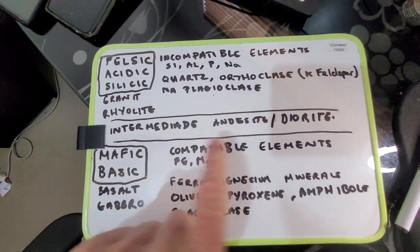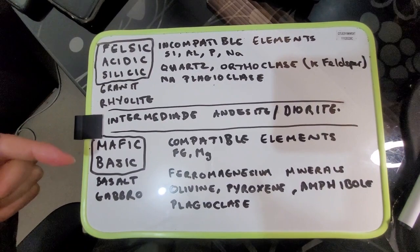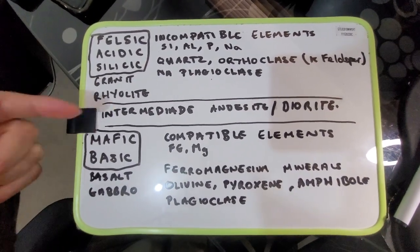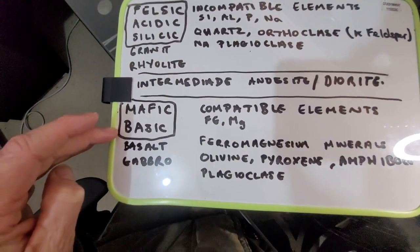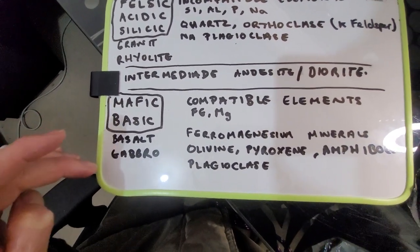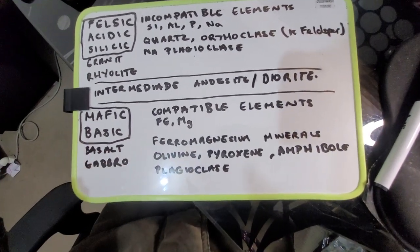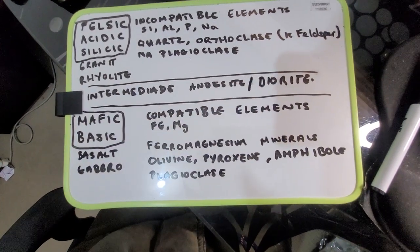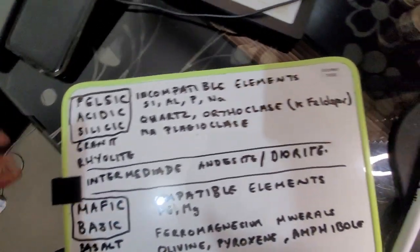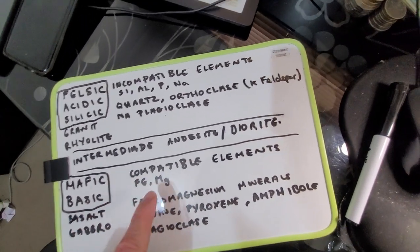Then we have intermediate - whether you use acidic or basic, or felsic and mafic, intermediate is the same. Then we have mafic and basic, which includes basalt, gabbros, and anything higher up. Then you've got ultra mafic, and probably ultra felsic, which is an actual rock that mainly contains silica.